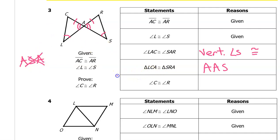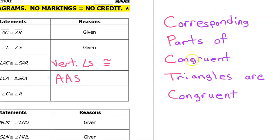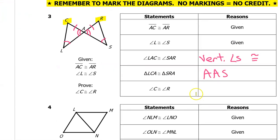In previous proofs, this is where we would have stopped, because all the proofs done before today we were simply trying to prove that the two triangles are congruent. But once you have proven that the triangles are congruent, you can go one step further and pick any pair of corresponding parts. Here they have chosen angle C and angle R. Since they are corresponding parts, they are automatically congruent. For the reason, simply write CPCTC.